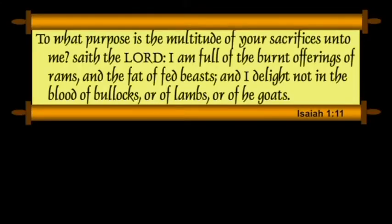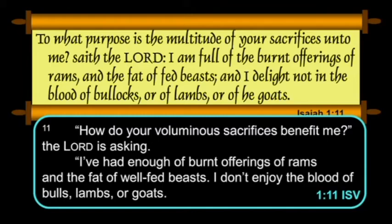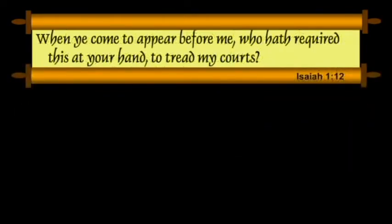Verse 11 in King James: "To what purpose is the multitude of your sacrifices unto me, saith the Lord? I am full of the burnt offerings of rams, the fat of fed beasts. I delight not in the blood of bullocks or of lambs or of he goats." The ISV: "How do your voluminous sacrifices benefit me? I've had enough of burnt offerings of rams and the fat of well-fed beasts. I don't enjoy the blood of bulls, lambs or goats." God is rejecting the formalism because their heart's not where it belongs.